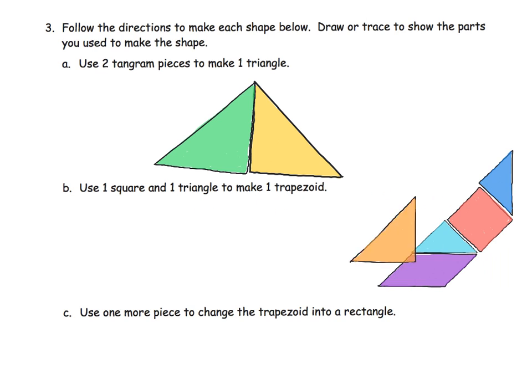Use a square and a triangle to make one trapezoid. So here's your square right here. Here's your square. And then here's a triangle. And if we wanted to, we could do that. And there is our trapezoid.